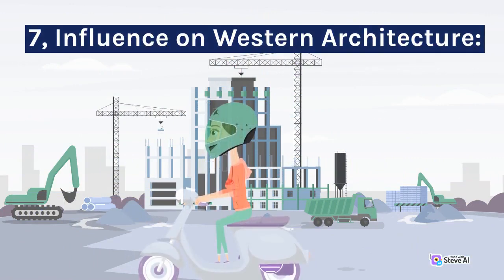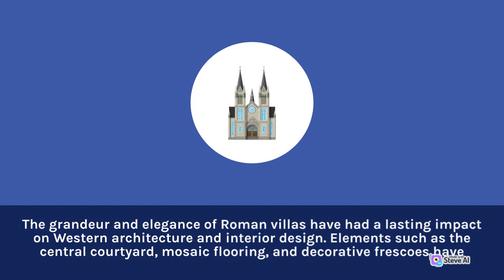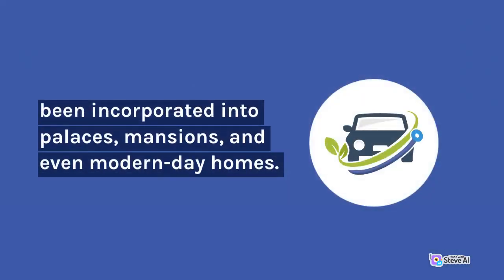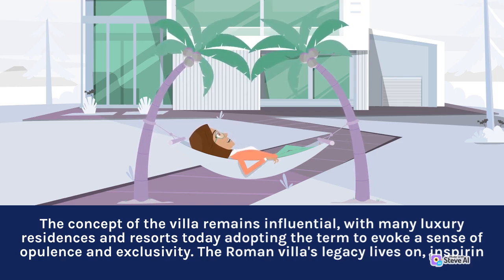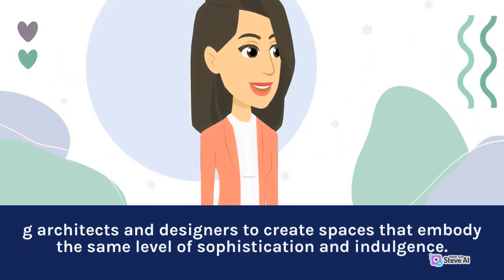7. Influence on Western Architecture. The grandeur of Roman villas has had a lasting impact on Western architecture and interior design. Elements such as the central courtyard, mosaic flooring, and decorative frescoes have been incorporated into palaces, mansions, and even modern-day homes. The concept of the villa remains influential, with many luxury residences and resorts today adopting the term to evoke a sense of opulence and exclusivity. The Roman villas' legacy lives on, inspiring architects and designers to create spaces that embody the same level of sophistication and indulgence.